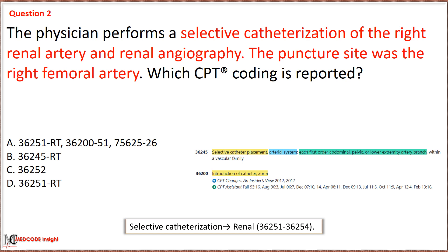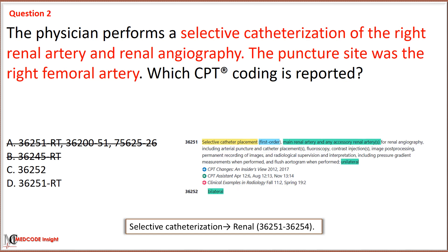Based on the body region involved, we eliminate option B with code 36245, used for abdominal catheterization. We also eliminate option A with code 36200, which is used for non-selective catheterization, as selective catheter placement includes procedure code 36200 to gain access. Both options C and D are used for renal catheterization. Since the scenario involves catheterization of the right side only, the correct option is Option D with code 36251, used for selective catheter placement in the first order of the main renal artery and any accessory renal artery on the unilateral side.